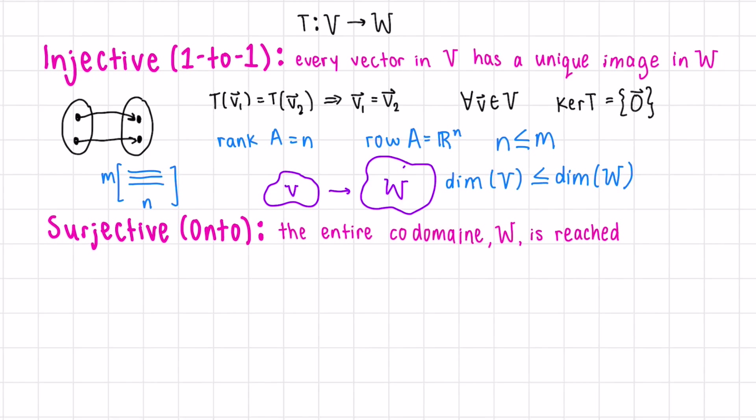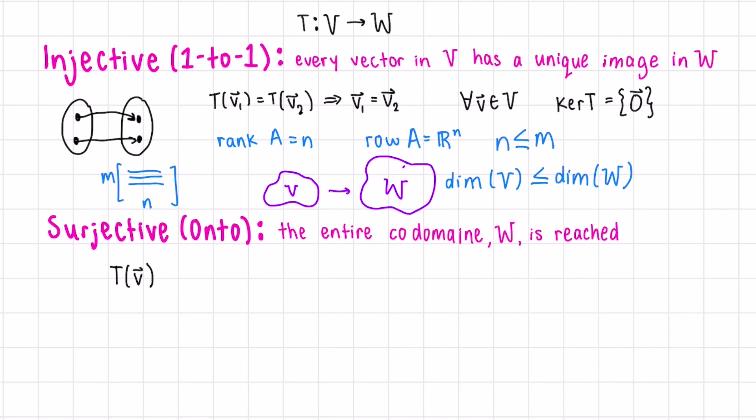Next, what does surjectivity mean? This means that the entire codomain W is reached. If we transform our vector V, we get W, a vector in our codomain, for each V in vector space V and W in our vector space W. Another way to put this would be that the image of the transformation is the whole space, the whole codomain.